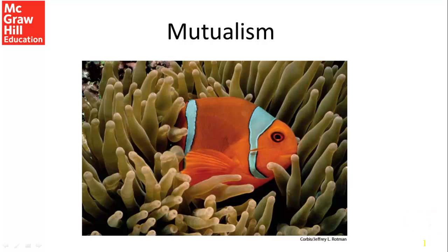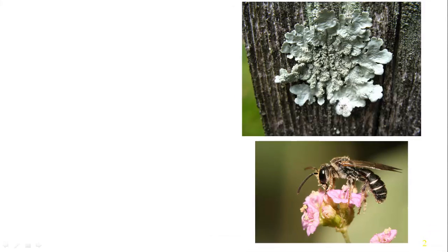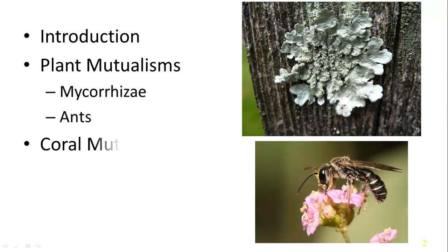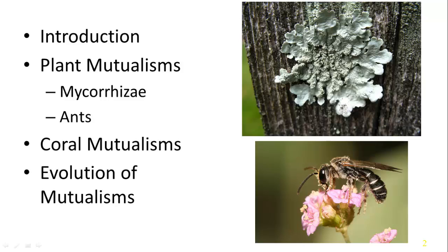Okay, mutualisms. Everybody knows about these — they're fun to talk about. Here I'm highlighting the clownfish and the anemone, which have a mutualistic relationship. What is a mutualism? We're going to go over that today. We'll start with an introduction and talk about plant mutualisms, including mycorrhizae and ants, coral mutualisms, and how mutualisms evolve.